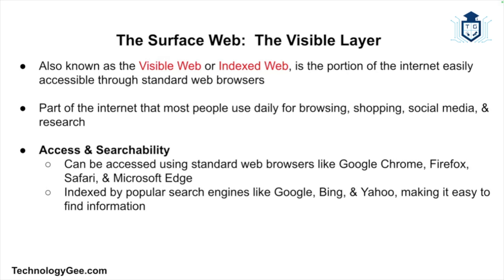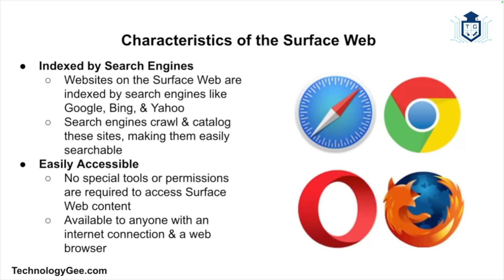The surface web, sometimes referred to as the visible web or the indexed web, is the part of the internet that is easily accessible through standard web browsers like Google Chrome, Firefox, and Safari. This is the part of the internet that most people are familiar with and use on a daily basis, including websites, blogs, social media platforms, online stores, and content indexed by search engines like Google, Bing, and Yahoo.